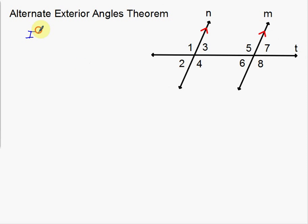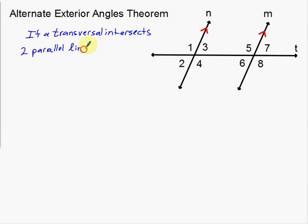Let's start with the hypothesis: if a transversal intersects two parallel lines, then — my conclusion. One thing you can actually probably see from this is, if I look at the alternate exterior angles, here's angle 1 — there's an exterior angle. And if I go alternate, so I cross over the transversal and I go to the other exterior angle that's over here at 8, notice that 8 is kind of a big angle also. Notice angle 1 is big, angle 8 is big, so therefore 1 and 8 are, in fact, going to be congruent.